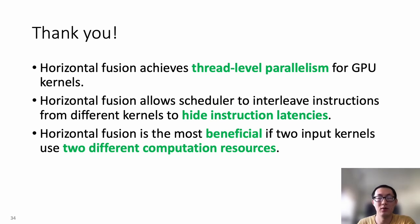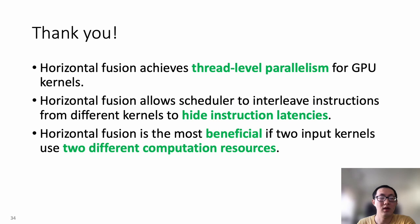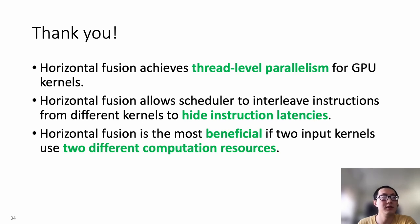In this paper, we propose horizontal fusion, which achieves thread-level parallelism for GPU kernels. Horizontal fusion allows the scheduler to interleave instructions from different kernels to hide instruction latencies. Horizontal fusion is most beneficial if two input kernels use two different computation resources. Thank you, and bye-bye.